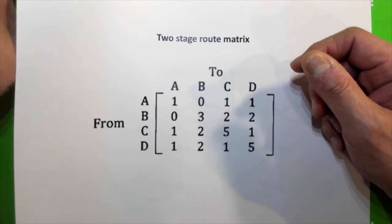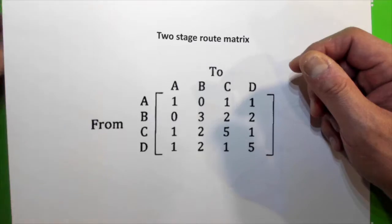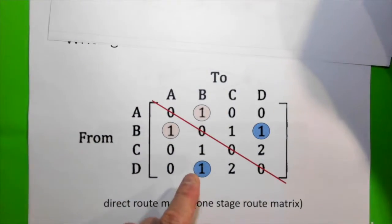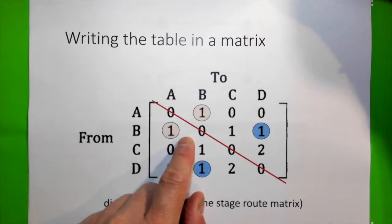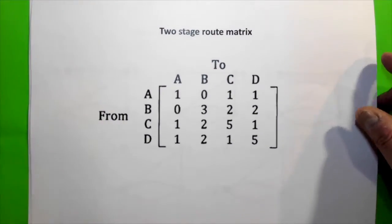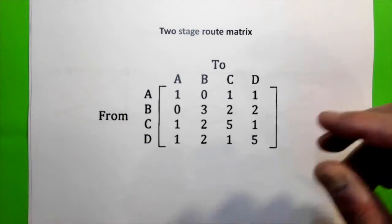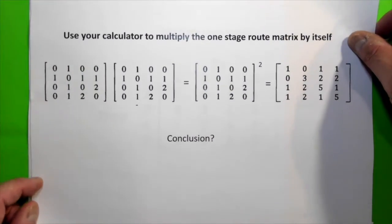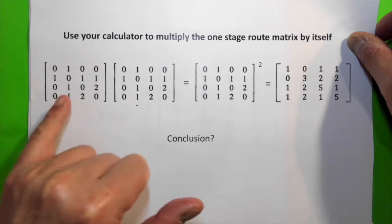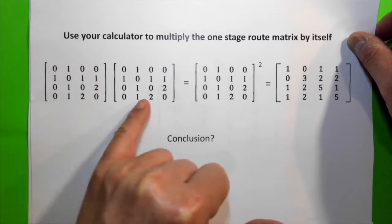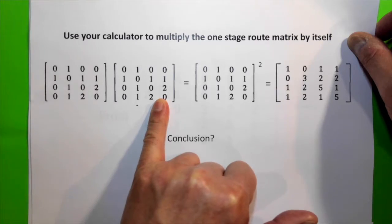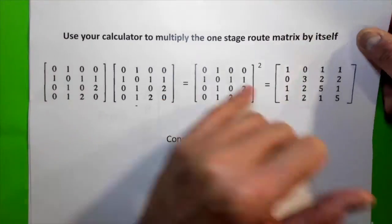Next, we're going to see is there a relationship between the two-stage route matrix and the one-stage route matrix. Remember, this is a one-stage route matrix and this is a two-stage. Take your calculator out or use your brain. Let's actually multiply the one-stage matrix by itself or square it. Now, this is the answer.